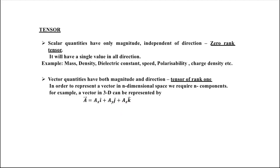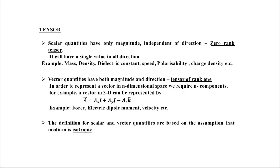In a given dimension, the maximum number of components equals that dimension, and we will need maximum 3 components in 3D. A vector representing A has a minimum of 1 component. Examples of vector quantities include force, dipole moment, and velocity. So, for a scalar quantity or vector quantity, this involves the assumption that the medium is isotropic.